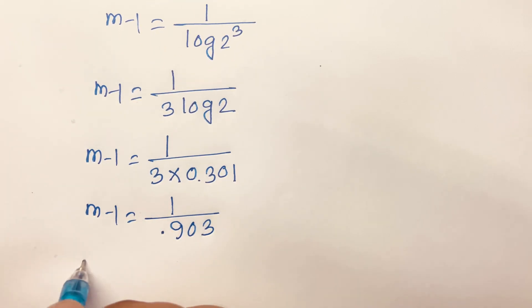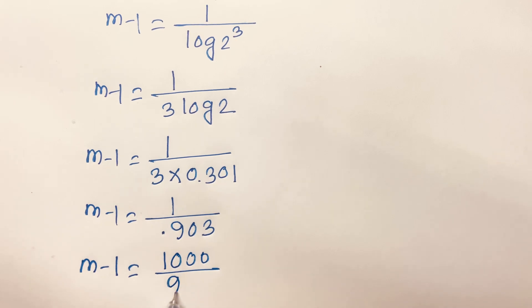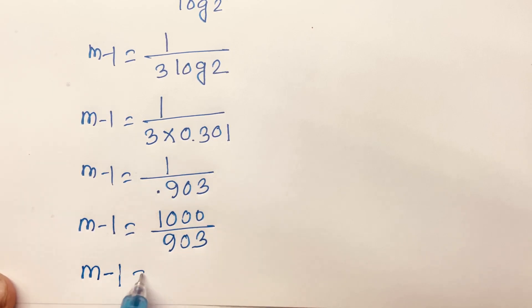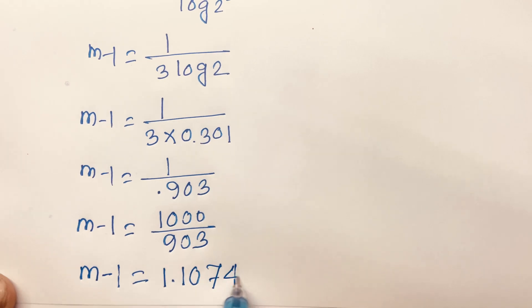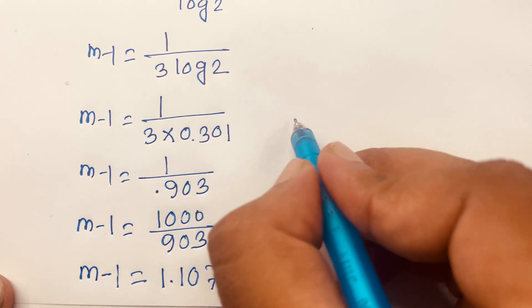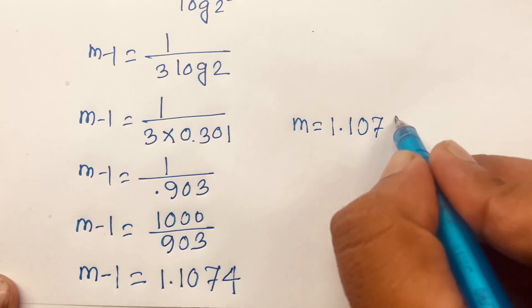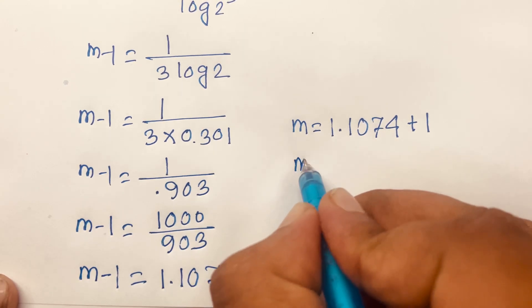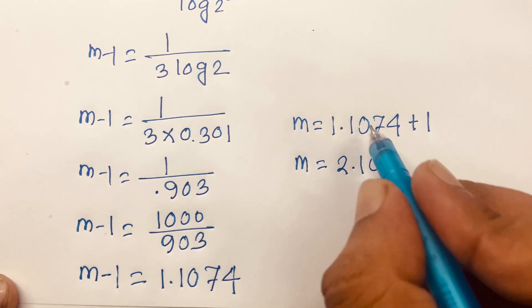So m minus 1 is equal to 1.1074. Moving the minus 1 to the right side gives positive 1, so m is equal to 1.1074 plus 1, which equals 2.1074.